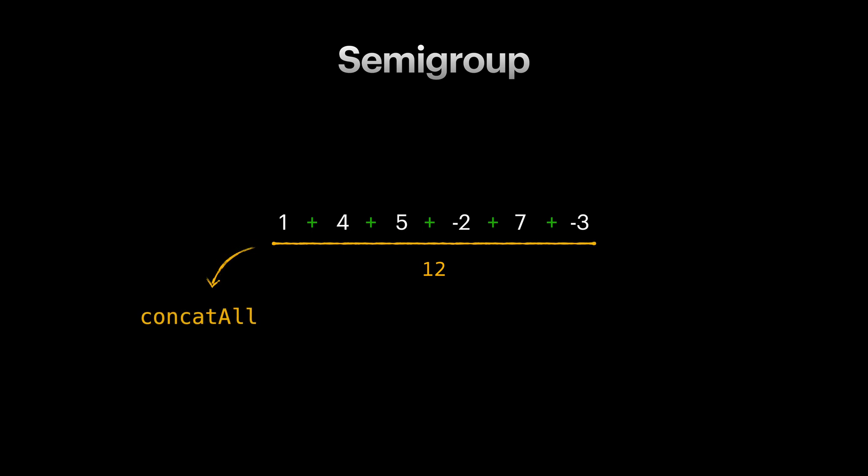This means we can define a function named, let's say, concat all that receives a list of integers and adds them all. Since concat function exists on any semigroup, then our concat all logic is not depending on anything specific about integers. So we can easily replace them with generic semigroup values of the same type.